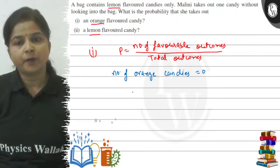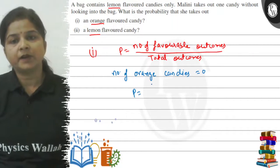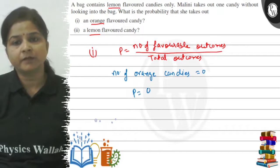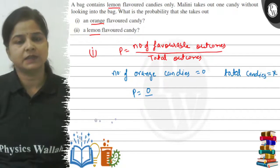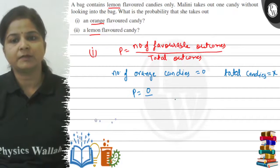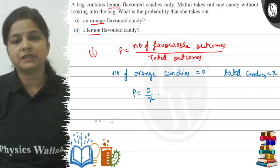The number of orange candies is zero. Suppose the total candies is X. If the number of total candies is X, then the required probability is zero divided by X, which equals zero.